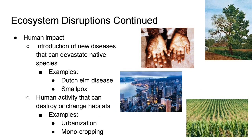Human impacts can also disrupt native species. Diseases are one example — humans bringing in new diseases that impact the organisms already there. Smallpox, which Spanish conquistadors brought to Native Americans, is one example. Dutch elm disease was spread by beetles that carried a fungus attacking elm trees that had no resistance to it.